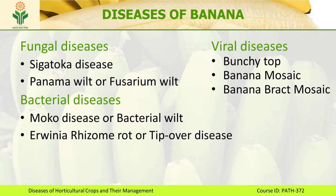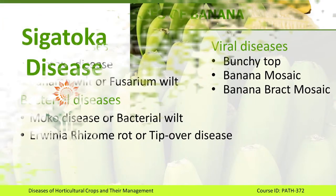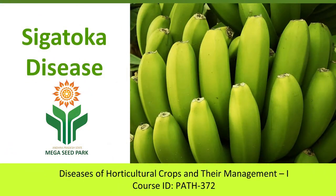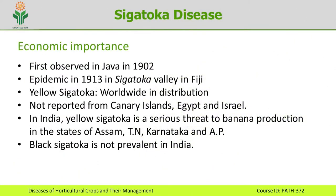Among the fungal diseases, the most important one that affects the foliage is Sigatoka disease. The disease was first reported in Java in 1902 and it attained epidemic proportions in 1913 in Sigatoka Valley in Fiji. That is why the disease is known as Sigatoka.